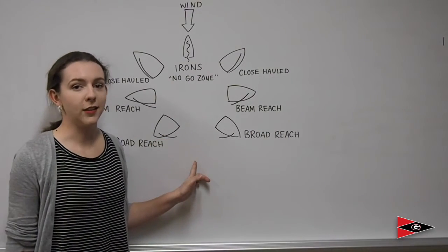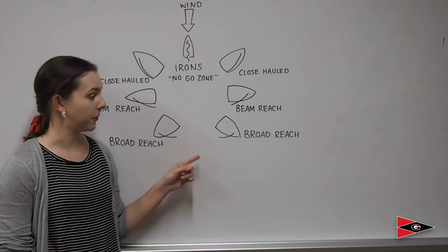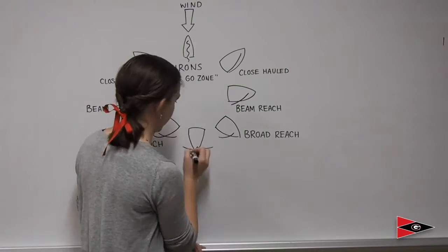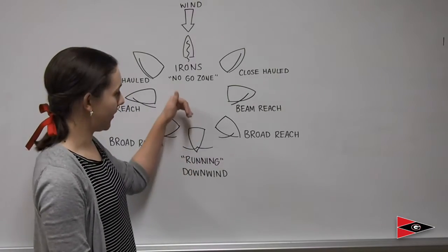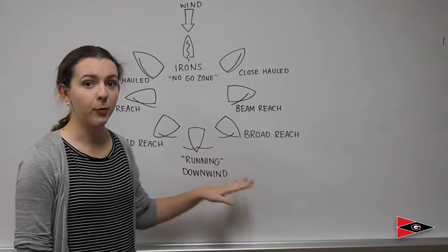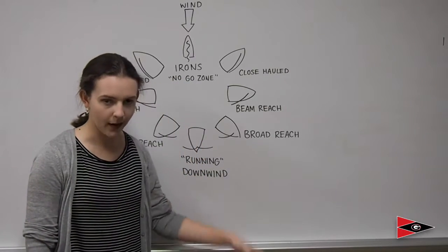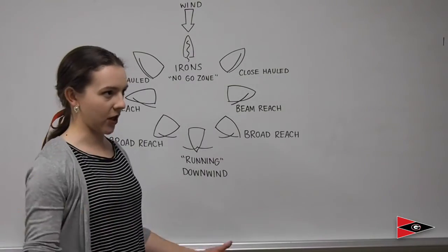Our next point of sail is the broad reach. A little fun fact: a boat is sailing fastest when it's on a broad reach. A boat is running or going downwind when it's facing directly away from the wind, the opposite of irons, and when the sails are out perpendicular and the wind is just pushing from behind.